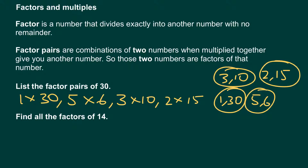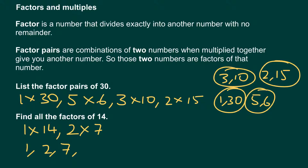Another question is: find all the factors of fourteen. It's a very similar question and I would approach it the same way — think of numbers that when multiplied together give you the number fourteen. There's obviously one times fourteen, and there is two times seven. Fourteen doesn't have any other factors. So all the factors of fourteen are one, two, seven, and fourteen.